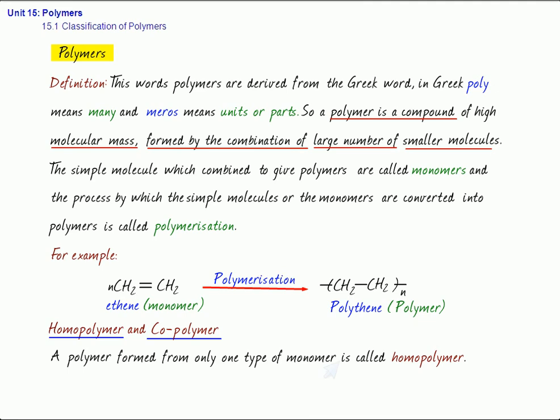So, as I told you, N number of ethene on polymerization gives polythene. This polythene is a homopolymer. How do you know that it is a homopolymer? Because it is made up of only one type of monomer unit, that is ethene. Similarly, there are another examples, like polystyrene.